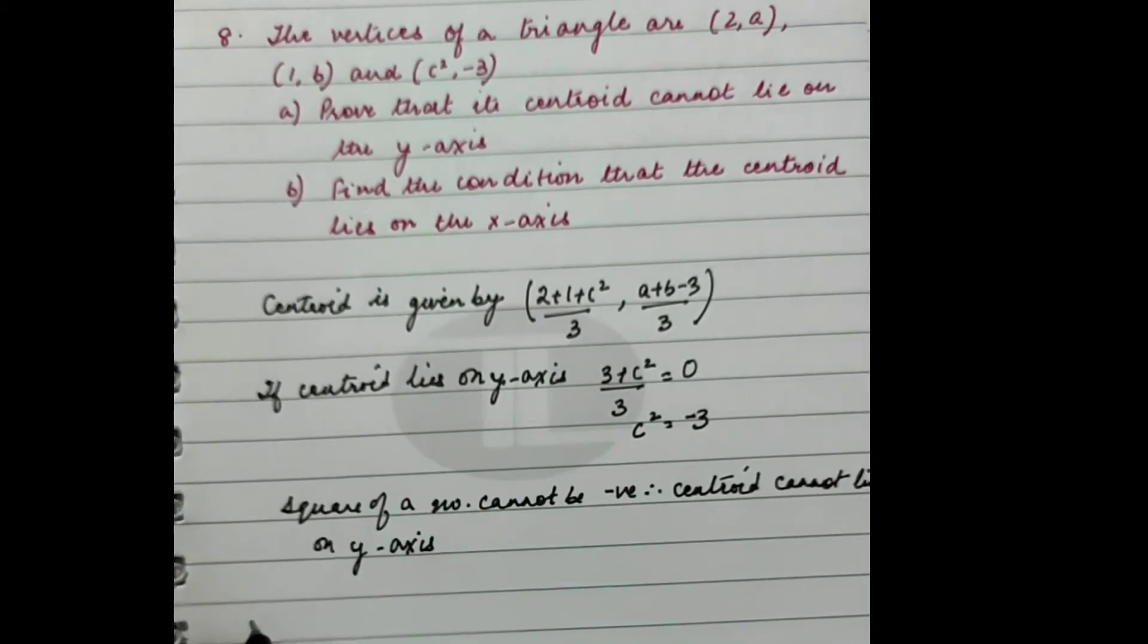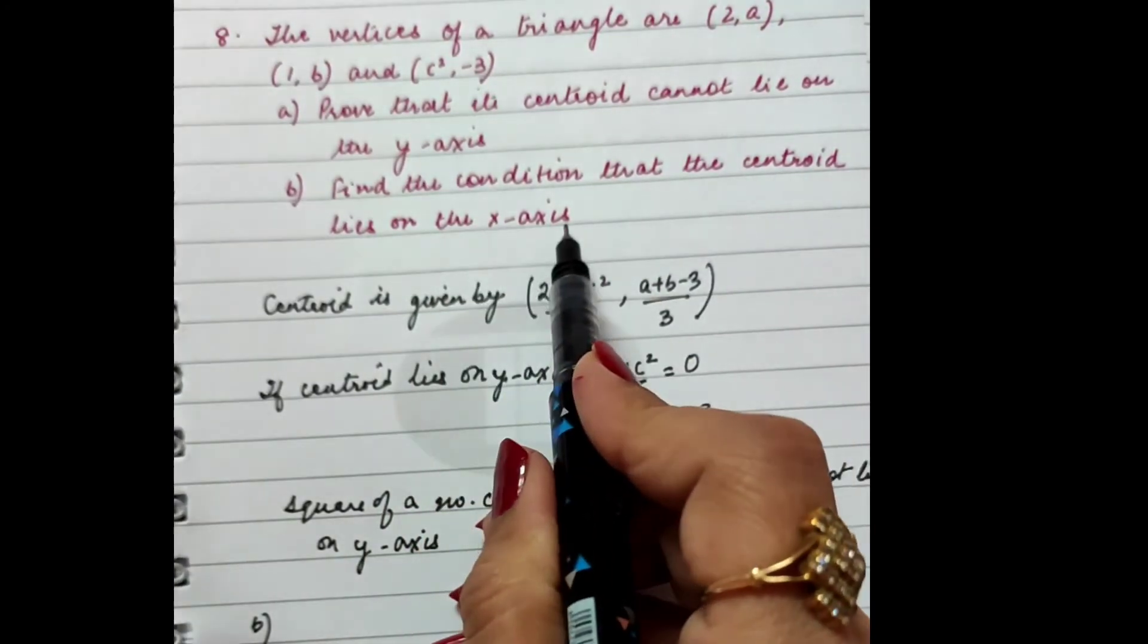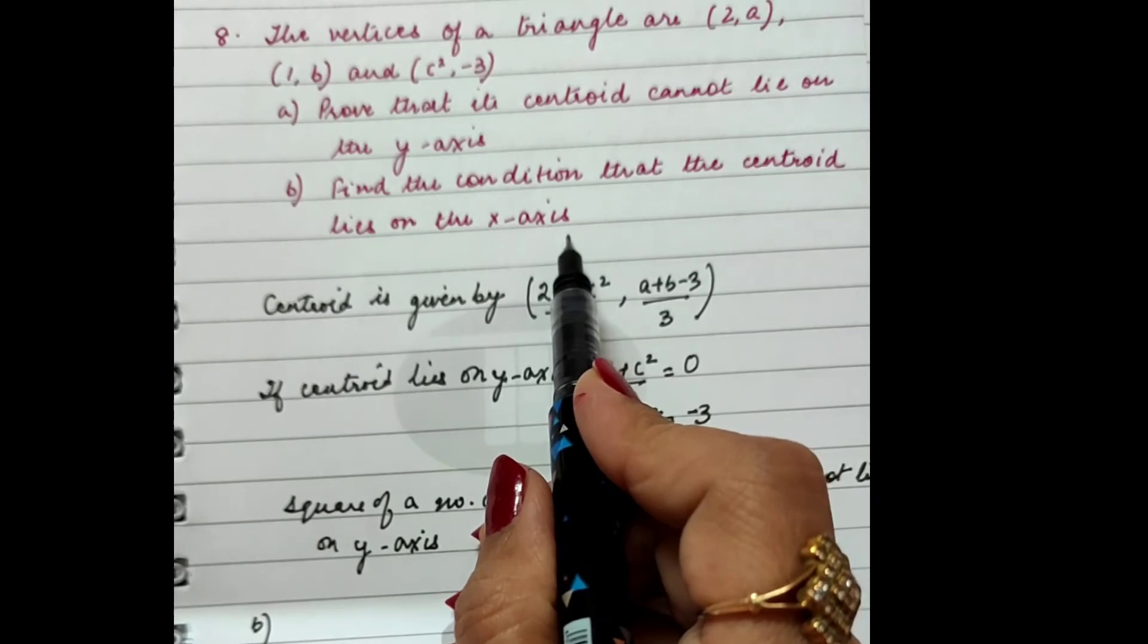Now, what is the second part? Part B says find the condition that the centroid lies on the x-axis. What is the condition for a point to lie on the x-axis?